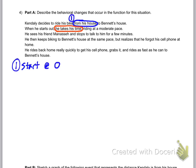Then, when he starts out, he takes his time, taking his time riding at a moderate pace. That's going slowly. So if it's not very fast, that means it's not going to be very steep when we sketch it.